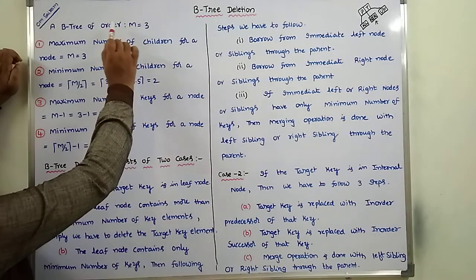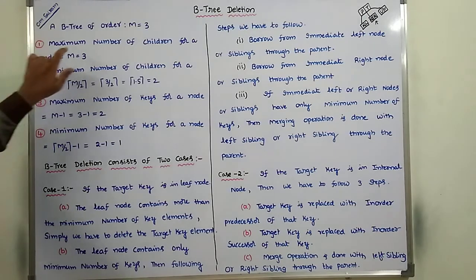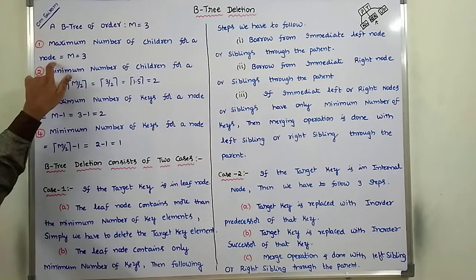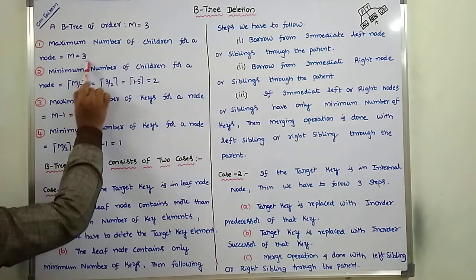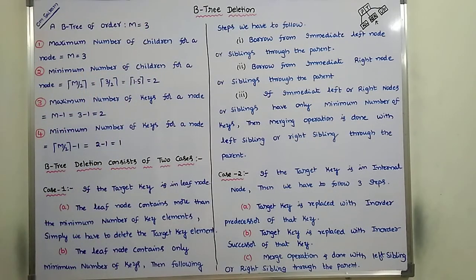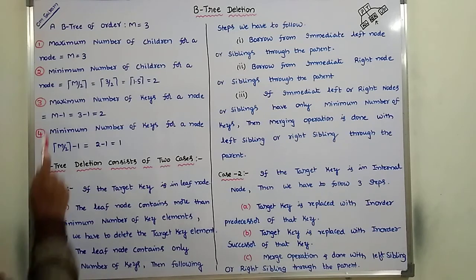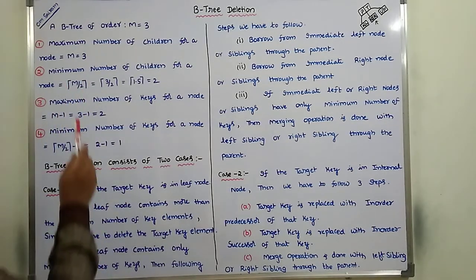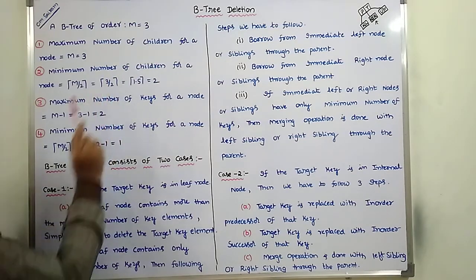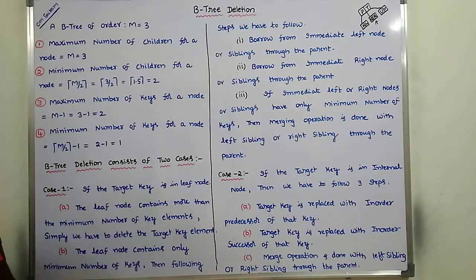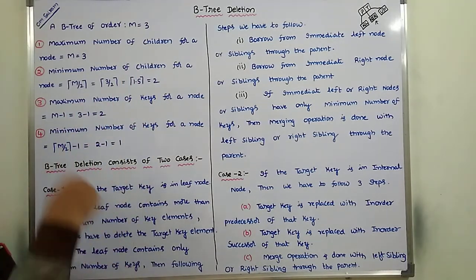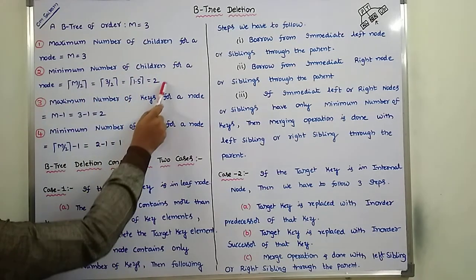For a B-tree of order M equal to 3, the maximum number of children for a node is M, which is 3. The minimum number of children is ceil(M/2). For M equal to 3, that is 3/2 equals 1.5, and the ceiling value of 1.5 is 2. So the minimum number of children for a node is 2.